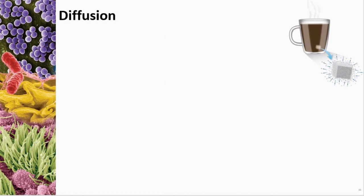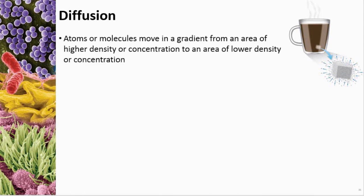The first transport mechanism is diffusion — the movement of molecules or atoms from an area of high concentration to an area of low concentration. The gradient describes this movement from high to low density or concentration. Going from high to low is 'going with the concentration gradient,' while going the opposite direction is 'going against the concentration gradient.'